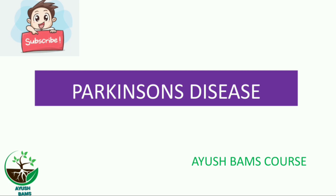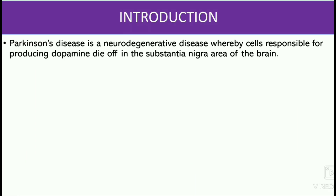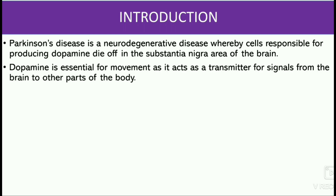Today we will be discussing Parkinson's disease. Parkinson's disease is a neurodegenerative disease whereby cells responsible for producing dopamine die off in the substantia nigra area of the brain. Dopamine is essential for movement as it acts as a transmitter for signals from the brain to other parts of the body.